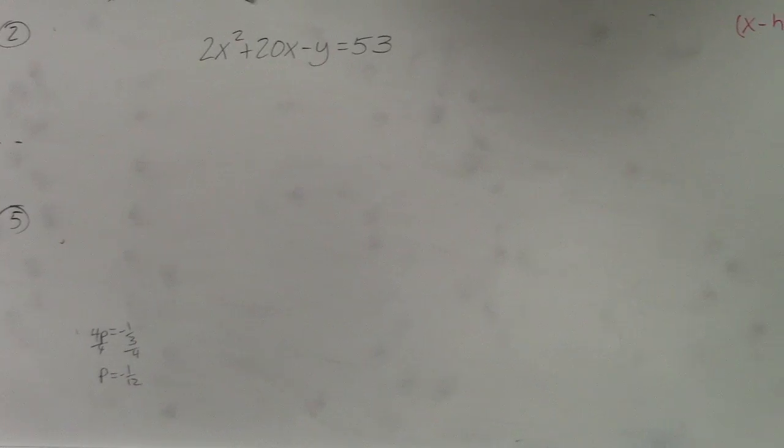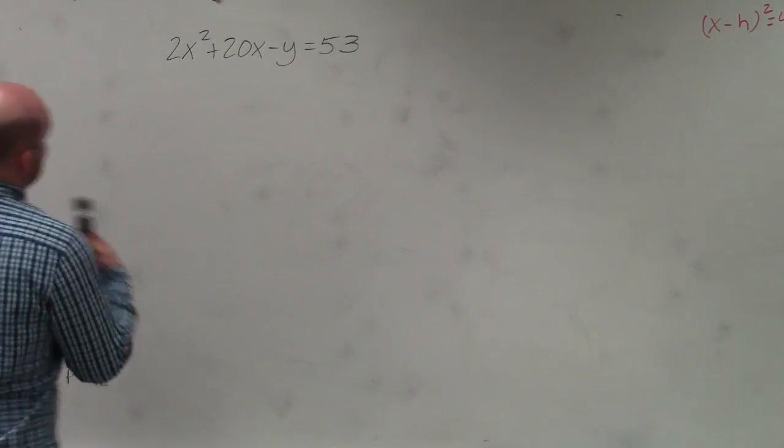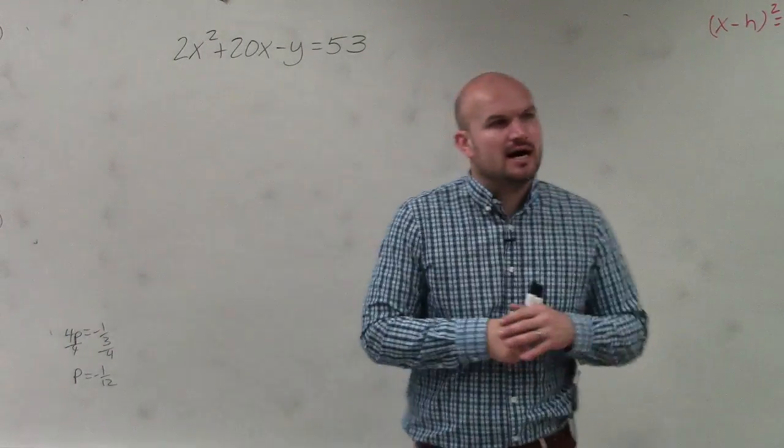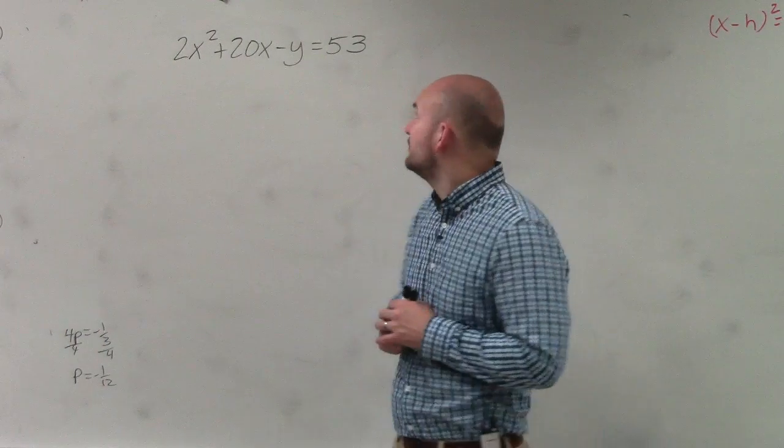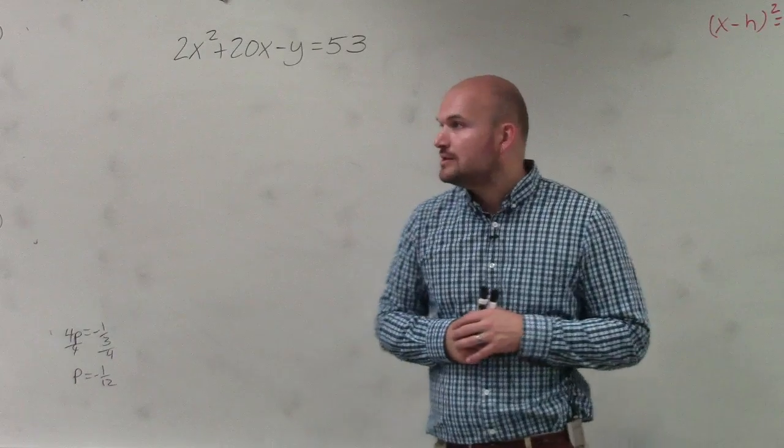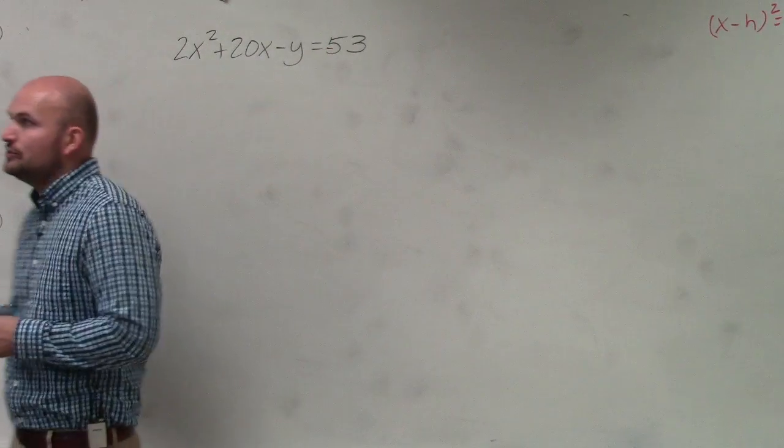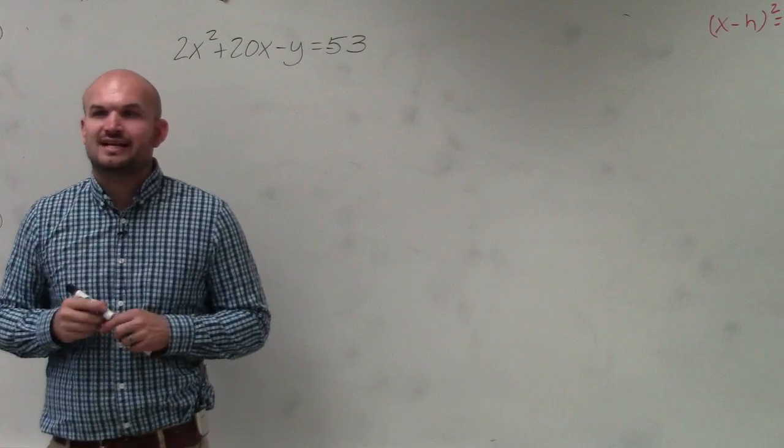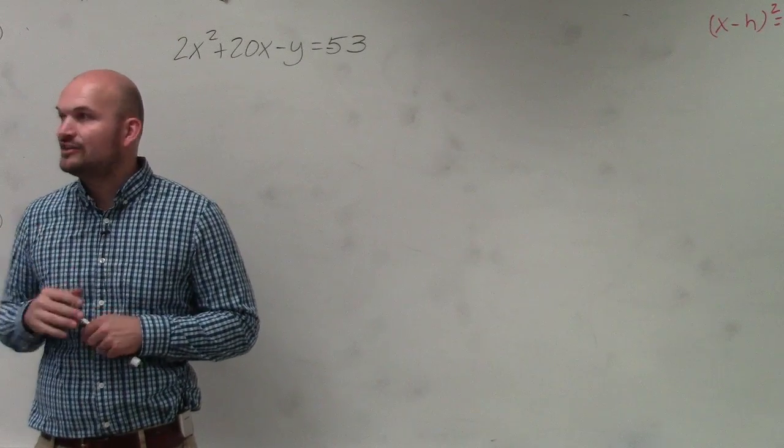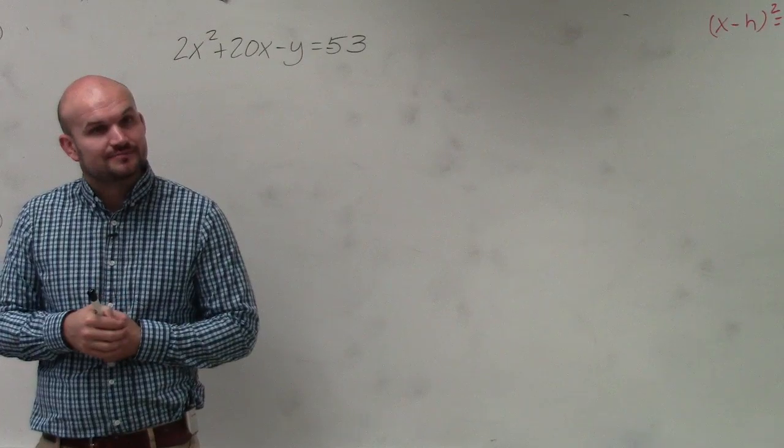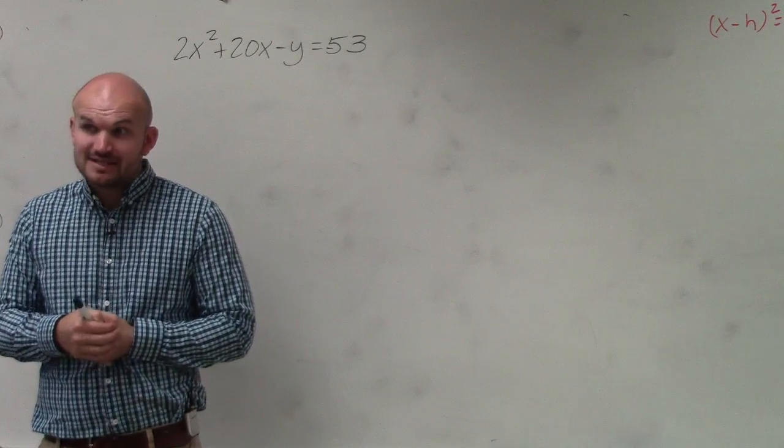All right. So ladies and gentlemen, we have 2x squared plus 20x minus y equals negative, or equals 53. Or equals negative 53, I apologize for that. Now, I'm asking you to write the equation in conics form and identify the vertex, focus, and the directrix. This is what I'm asking you guys to do.